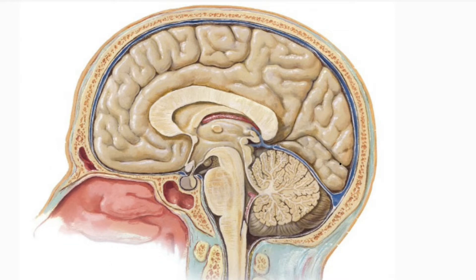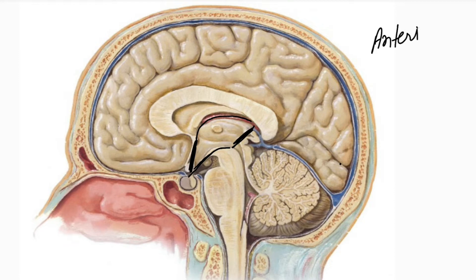Now we will study the boundaries of the third ventricle. The upper side is the roof, the lower side is the floor, the front side is the anterior wall, and the back side is the posterior wall. We will study each boundary in turn.